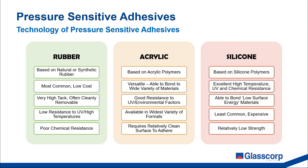Finally, we have adhesives based on silicone polymers. Silicone is known for excellent high temperature resistance as well as strong resistance to UV and chemical exposure. Silicone adhesives are better at adhering to low surface energy materials and are the only adhesives that can adhere to silicone. Being a specialized product used in extreme environments, they are a higher cost than the other two options, and are also relatively low strength compared to other adhesive types.